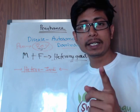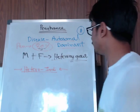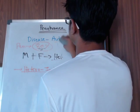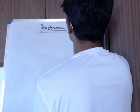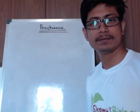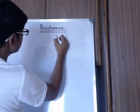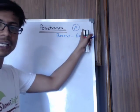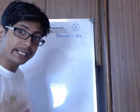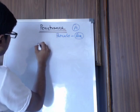So what is penetrance? Let me explain a scenario, then I'll explain what it is. Let's say in a population of 100 people, a disease is there. The disease could be autosomal dominant, autosomal recessive, sex-linked dominant, or sex-linked recessive. If it is an autosomal dominant disease, the individual will get the disease even if heterozygous or homozygous dominant. Penetrance of 80% means 80% of the time they are going to have the disease.